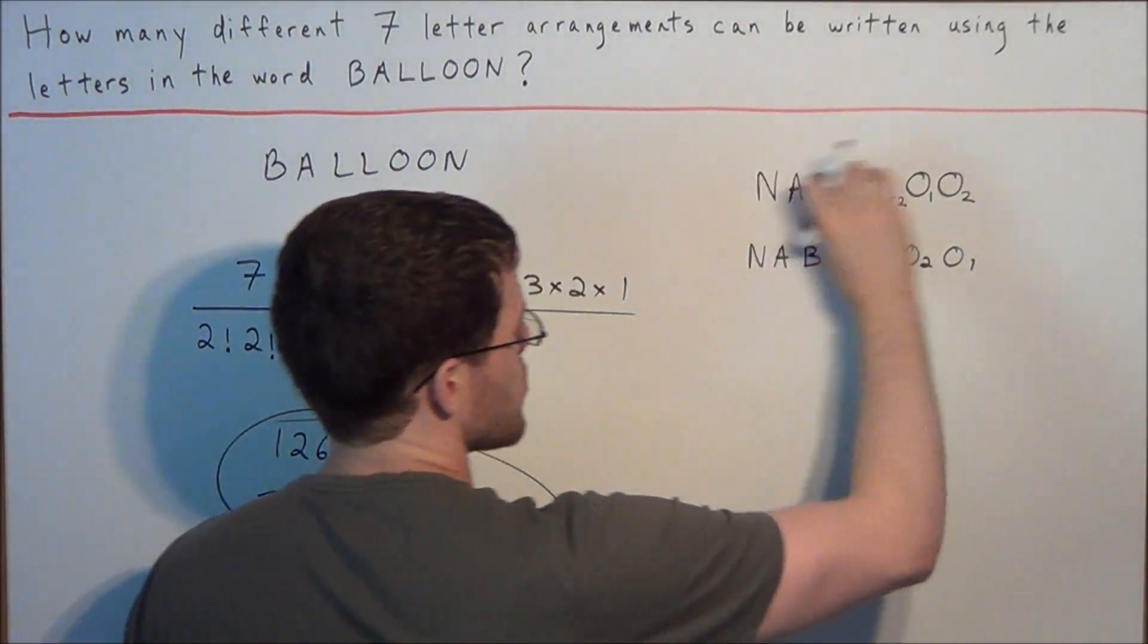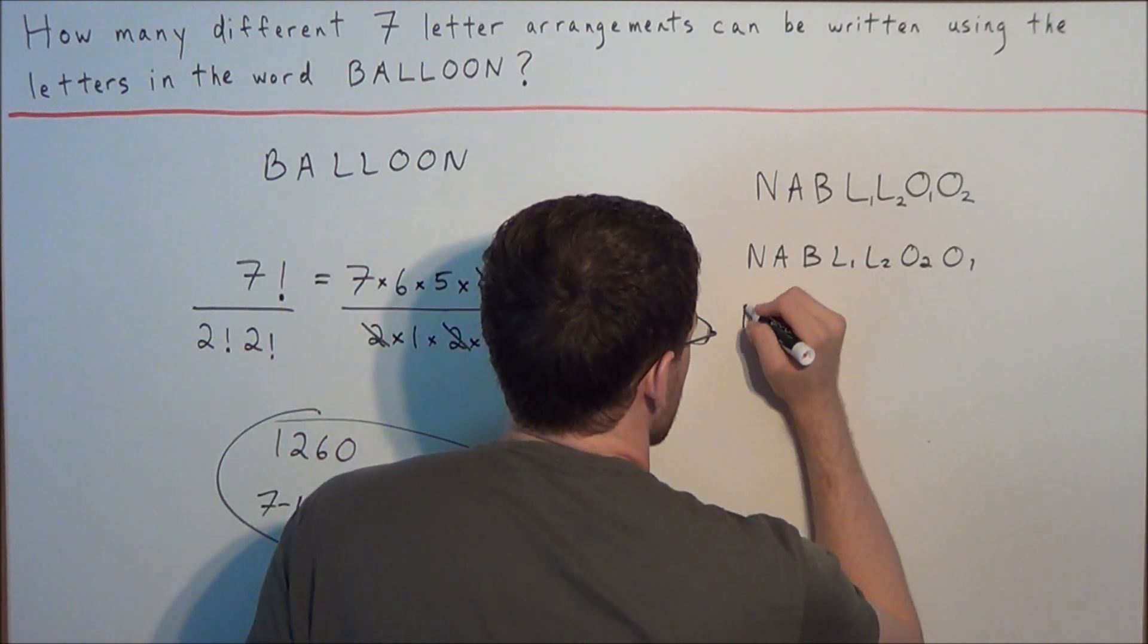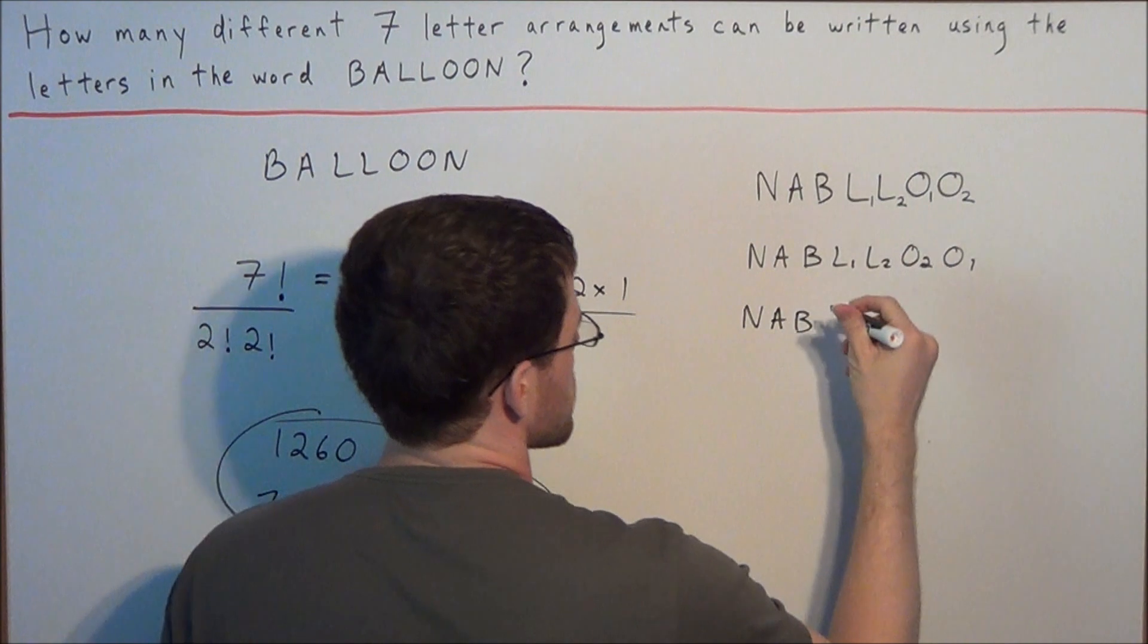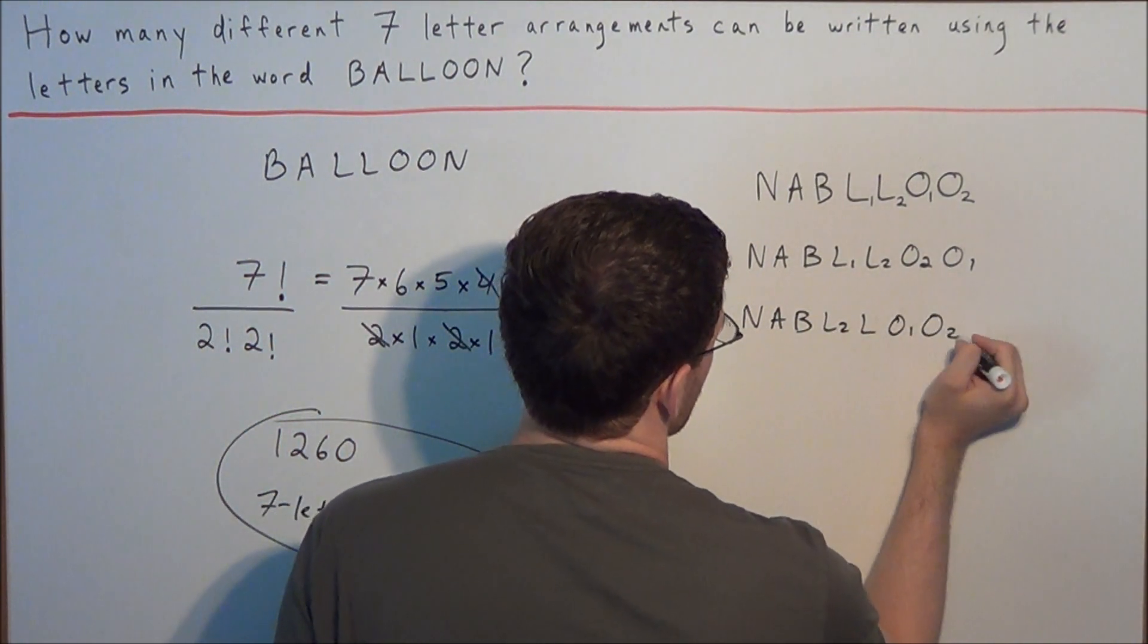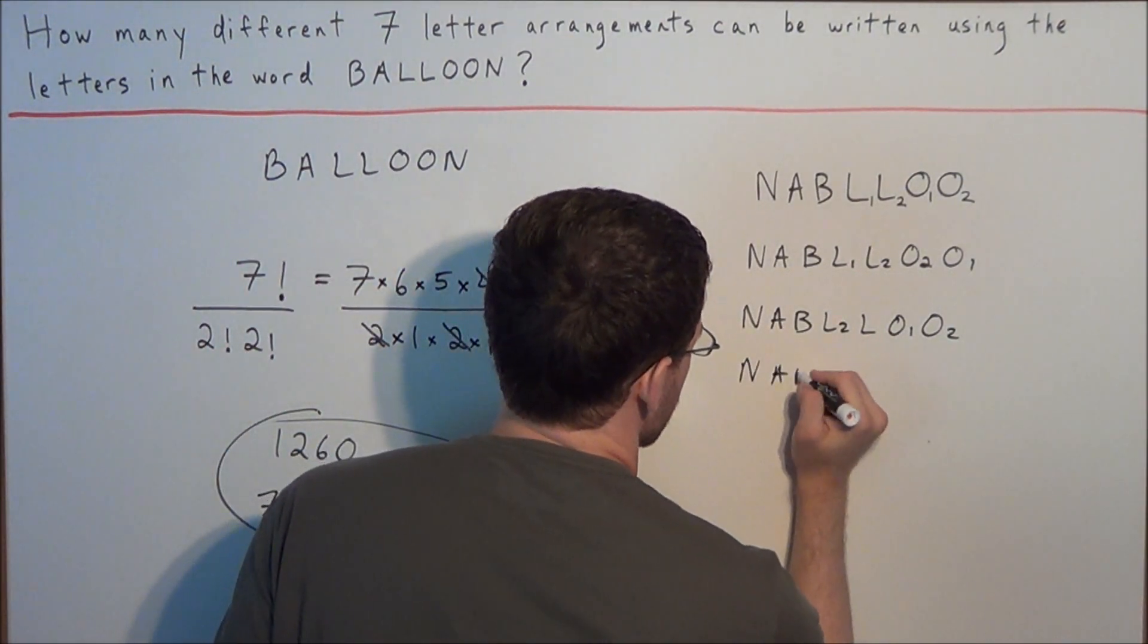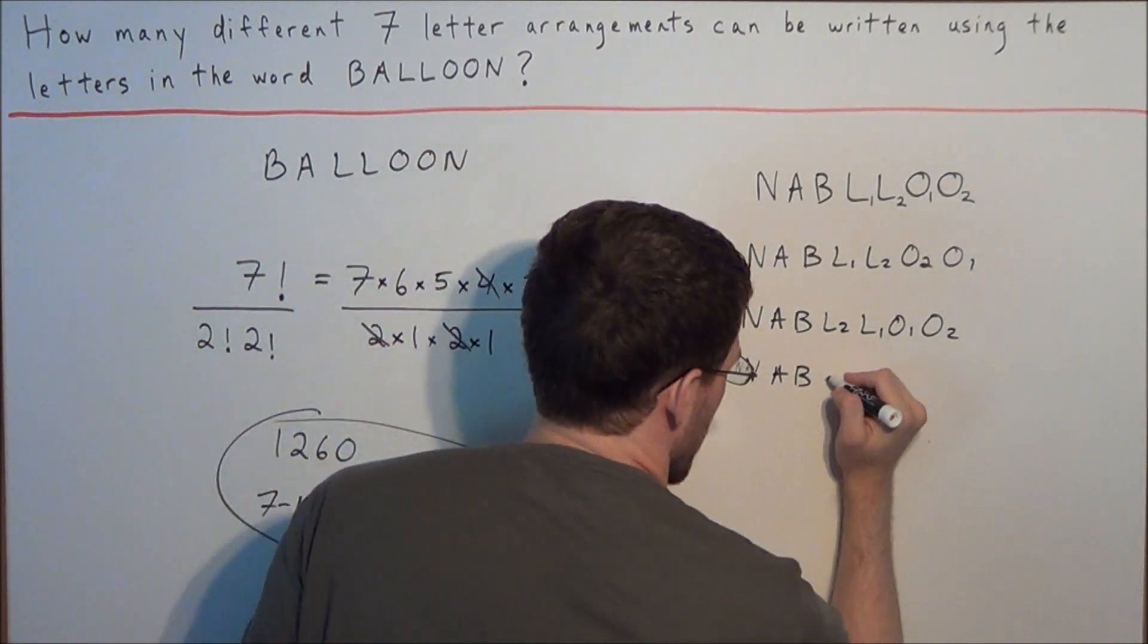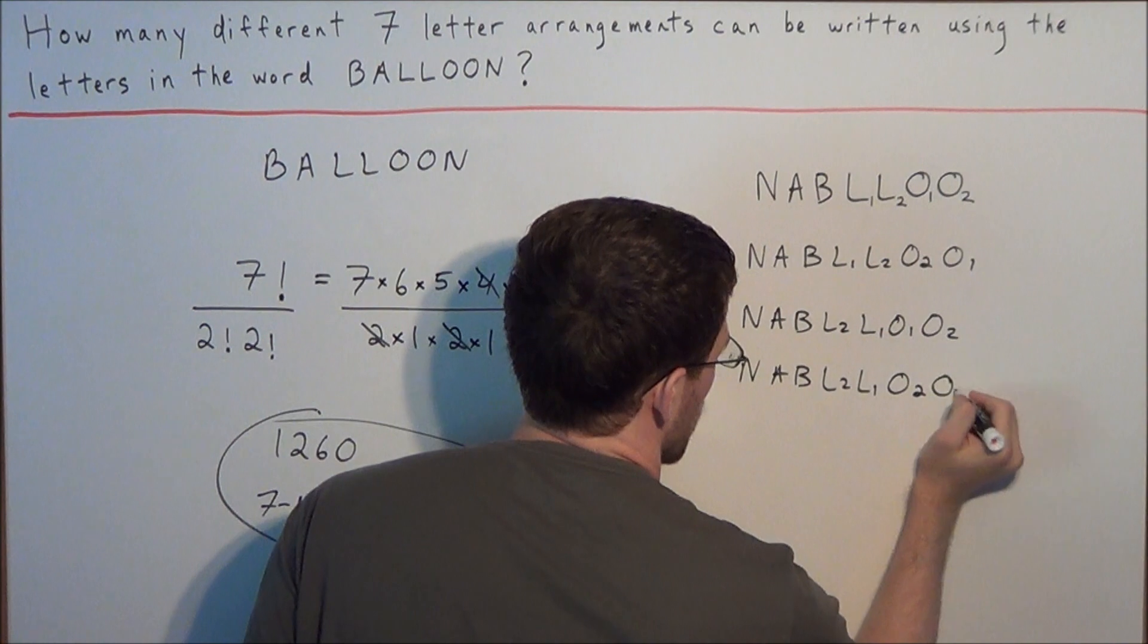And then there would be another two using this N-A-B-L-L-O-O. We would also have something like N-A-B and then we swap the L-1 and L-2. Now we would have L-2-L-1-O-1-O-2. And if we did it again, we have one more: N-A-B L-2-L-1 and now O-2-O-1.